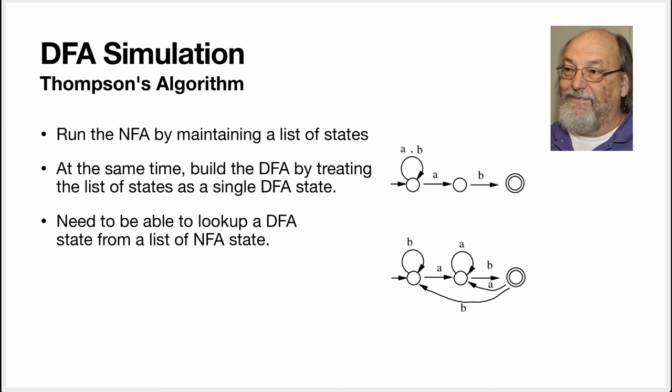Let's now see another way in which we can construct a DFA. So in a previous way, we would take the NFA, and we would convert it to a DFA, and then execute the DFA. Here we are running the NFA, and we are running the NFA by using the list of state approach. And as we are running the NFA, we're simultaneously building the DFA.